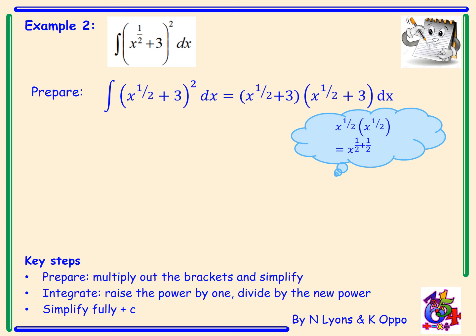Remembering x to the power 1 half times x to the power 1 half equals x to the power 1 half plus 1 half. We're going to add the indices and that gives me x to the power 1. So that becomes integral of x to the power 1 plus 6 times x to the power 1 half plus 9 with respect to x. I've jumped a couple of steps here so pause and take time to make sure you get the same answer.